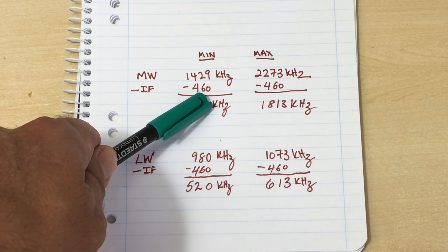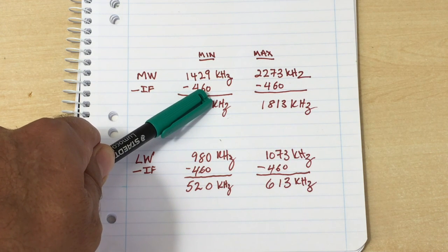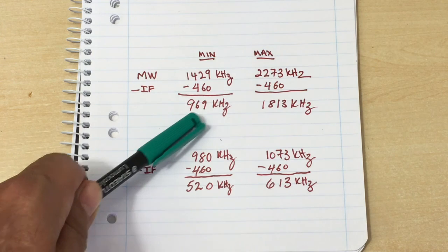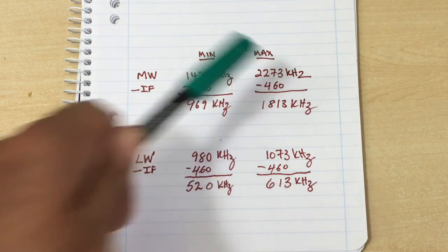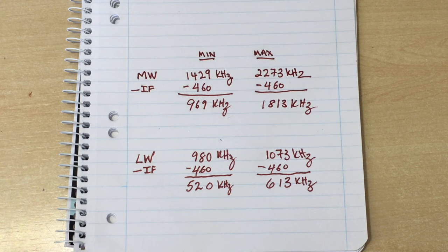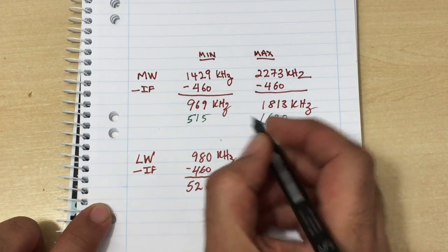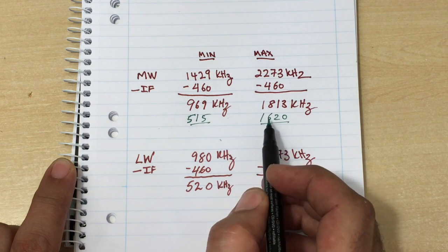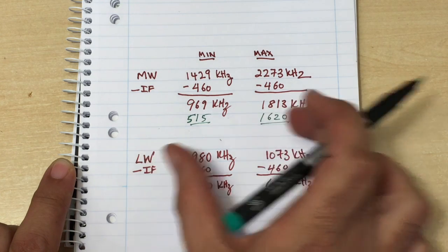So that when it mixes, the IF comes out at the frequency that I want to tune to. Now if I subtract 460 from both of those, I get a minimum frequency of 969 and a maximum frequency of 1813 kilohertz. Now that's a problem because, according to these specs, I should have 515 to 1620. So you see, I can never tune to that frequency because my minimum frequency is 969. I also tune above that because my maximum frequency is above 1620. So the whole thing is shifted up in frequency.